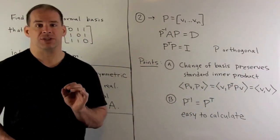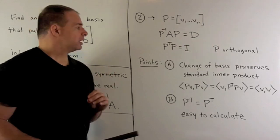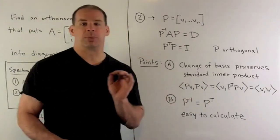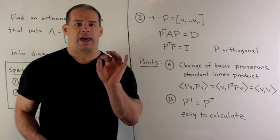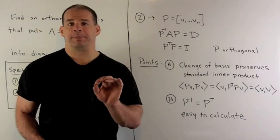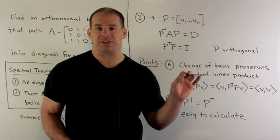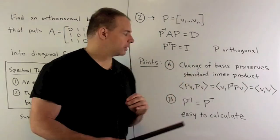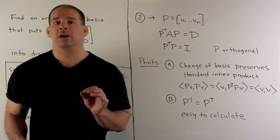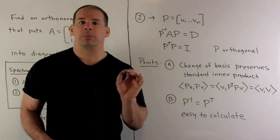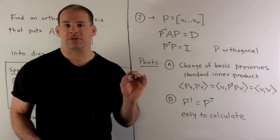What's the point of having an orthogonal matrix? First, it says that our change of basis is going to preserve the standard inner product. If I start with lengths before I apply P, we're going to wind up having the same lengths after we apply P. The idea is our change of basis by P preserves angles and it preserves lengths.